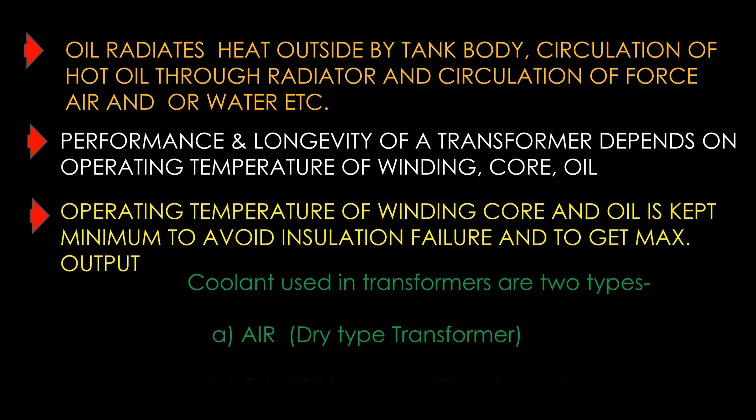Coolants used in transformers are of two types: A — air, and B — oil. Transformers using air as the coolant are called dry type transformers. In dry type transformers, generated heat is conducted across the core and windings and dissipated from the outer surface of windings to the surrounding air through convection. In the case of oil-immersed transformers, generated heat is taken and transferred by the oil to the walls of the tank through convection.